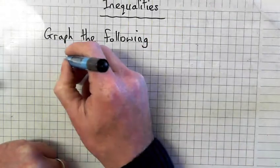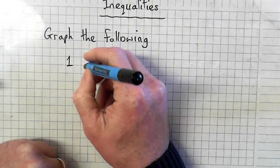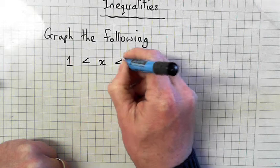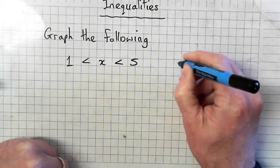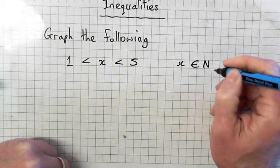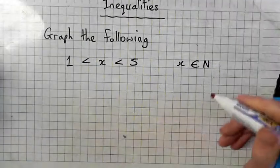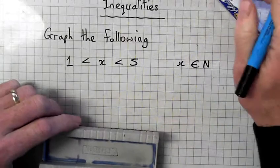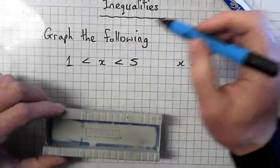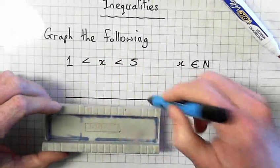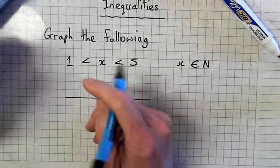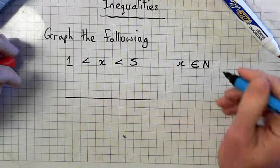Another example. So 1 less than x less than 5, and x natural numbers. What does that mean? Can I include 0? Can I include minus numbers? No. Can I include fractions or decimals? No.